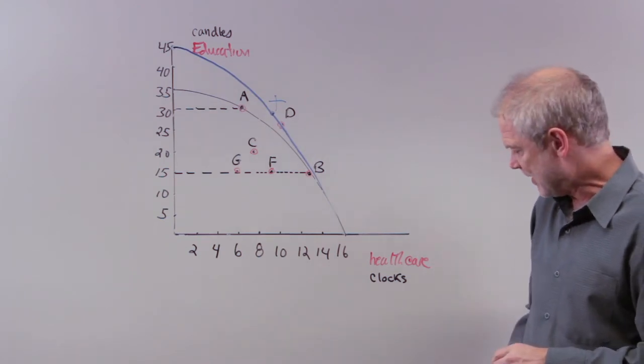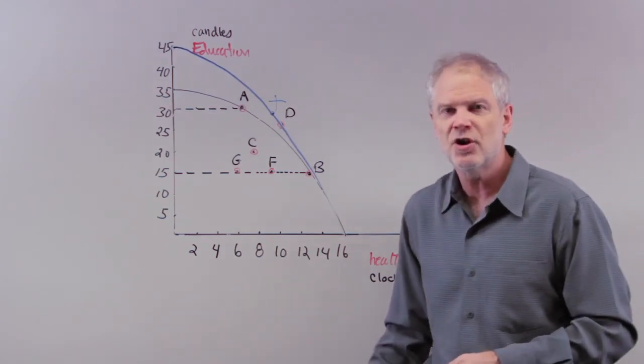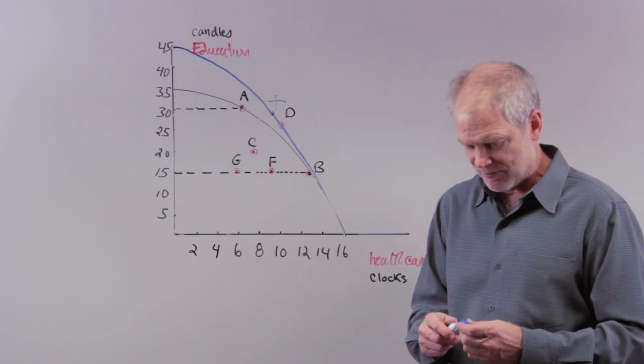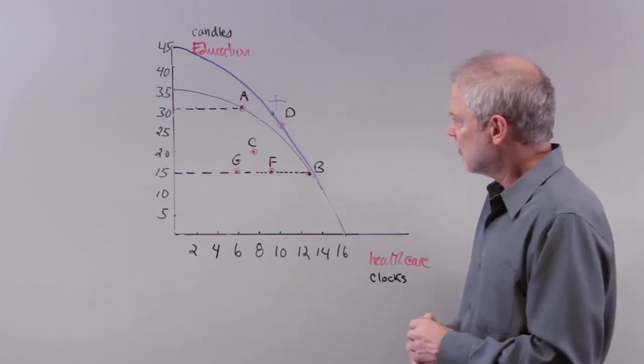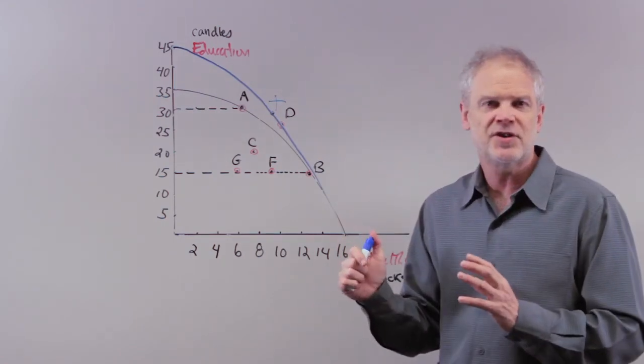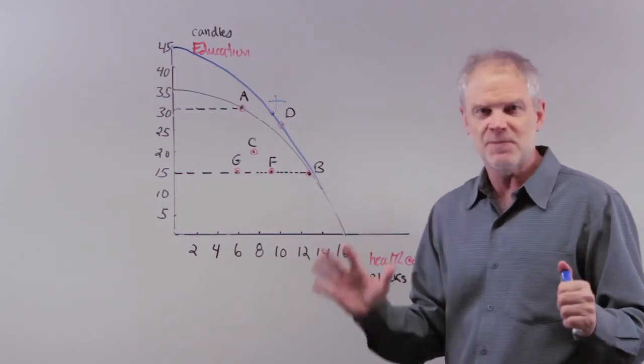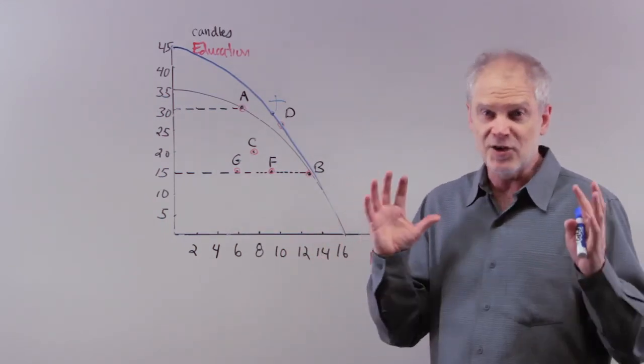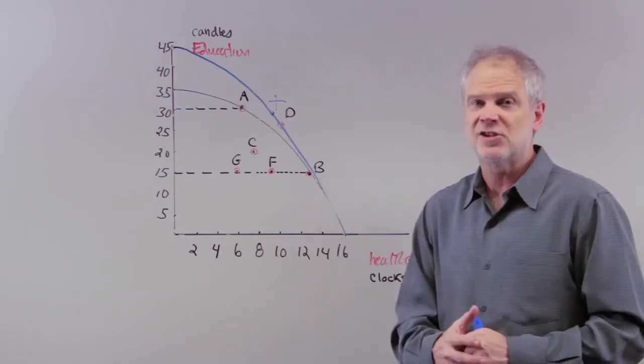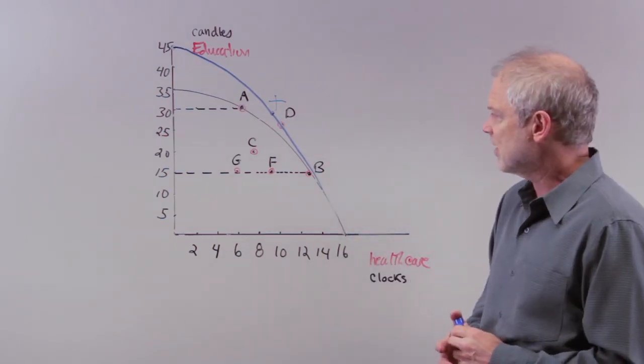So again, I've picked this theme up in lecture. We'll continue with this in chapter three as we head into the trade. But again, the production possibility frontier and the circular flow diagram are two simple models that provide, I think, useful insights into some of the things we'll be pursuing in this course. All right. I'll stop there. This is our first recitation. I'll see you for the next 15.